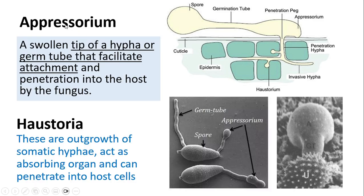To differentiate between appressorium and haustoria: the appressorium is the swollen tip of hyphae or germ tube involved in facilitating attachment and penetration into host cells by the fungus. Haustoria are outgrowths of somatic hyphae involved in absorption of water and nutrients from host cells, and they can also penetrate into the host cells.